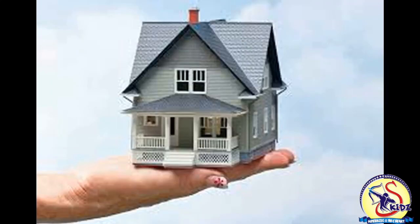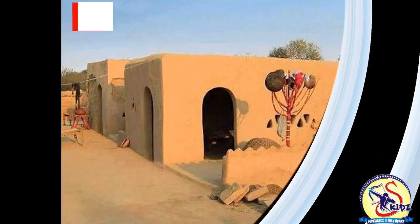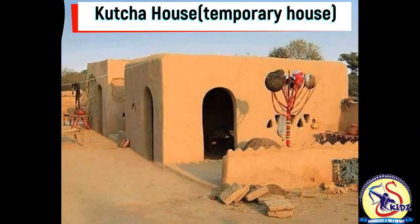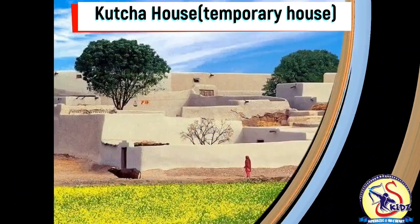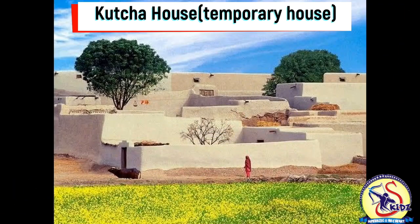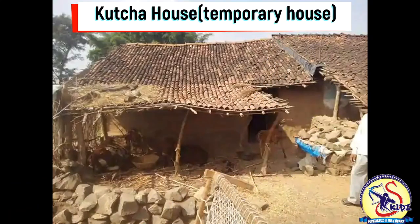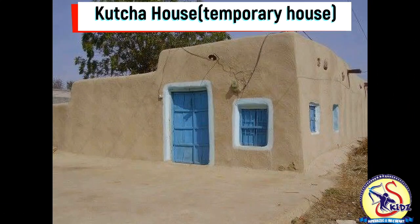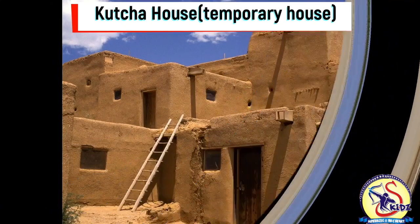We have different types of homes. First is the Kacha house. A Kacha house is made up of mud, straw, and bamboo. It is also called a hut. This type of house is not strong — they are temporary houses.